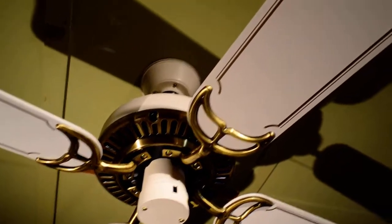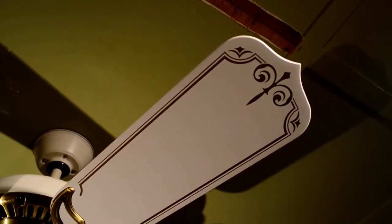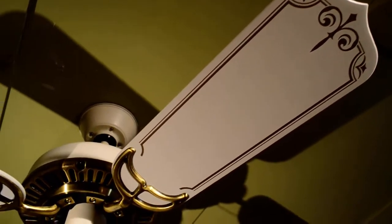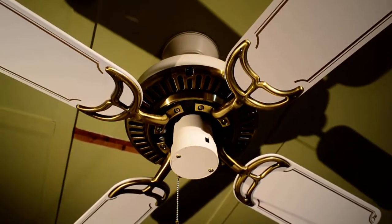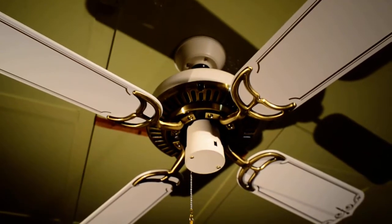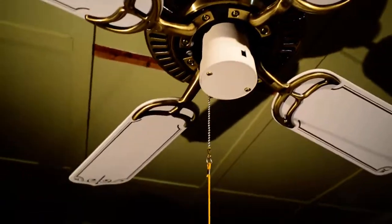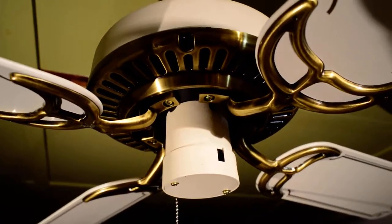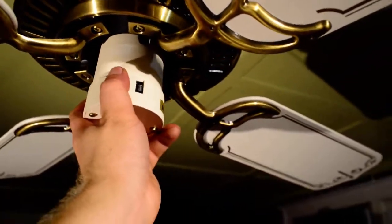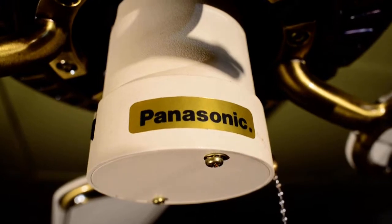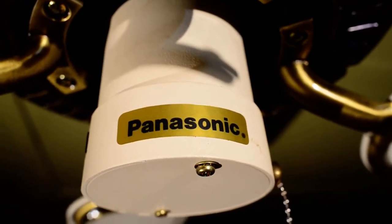As you can see, it's got stencil. I don't see Panasonic stencil all that often. What else does it have? A tassel! A nice golden-orange pull cord. If we turn the fan around, you see the logo.